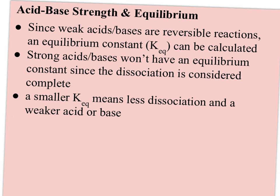The last thing to mention sets up Part B of Section 18.2 — the idea of acid-base strength and equilibrium. Weak acids and bases are reversible reactions, so there's an equilibrium constant, KEQ, that can be calculated. Strong acids and bases won't have an equilibrium constant since dissociation is assumed complete and reactants go to zero — you can't set up an equation with zero in the denominator. A smaller KEQ means less dissociation and a weaker acid or base, just as in Chapter 17. The further KEQ is from 1 — like 0.0001 — the less it dissociates, leaving more reactant and forming less product.